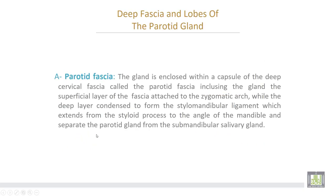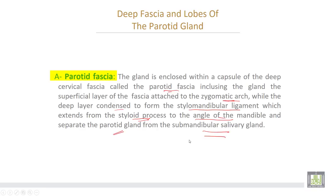The deep fascia and lobes of the parotid gland. The gland is enclosed within a capsule of deep cervical fascia called the parotid fascia. The superficial layer of the fascia is attached to the zygomatic arch, while the deep layer condenses to form the stylomandibular ligament, which extends from the styloid process of the skull to the angle of the mandible and separates the parotid gland from the submandibular salivary gland.